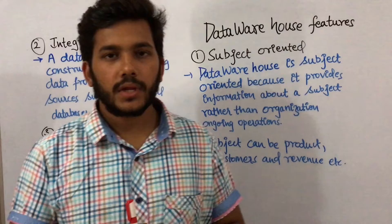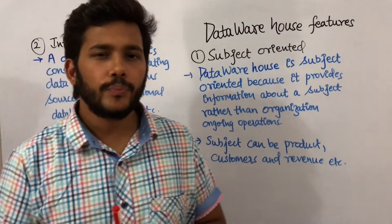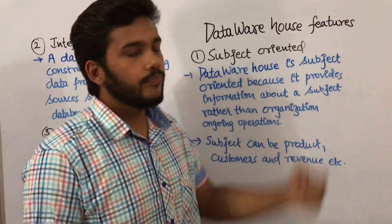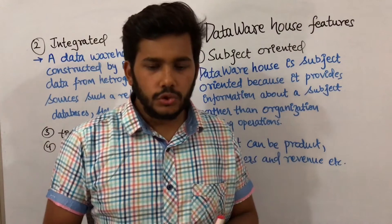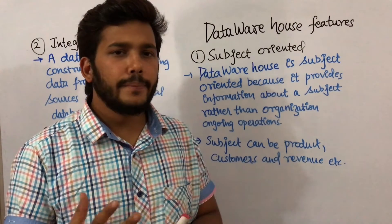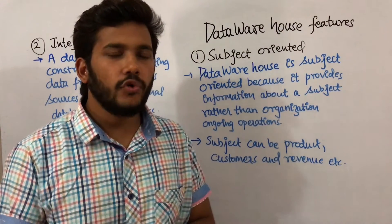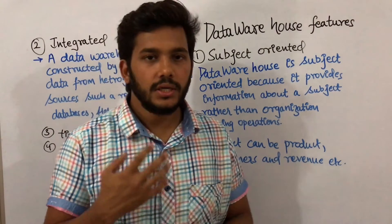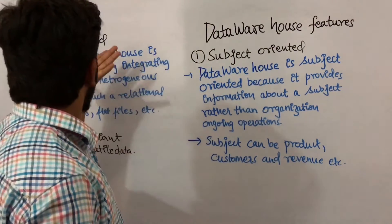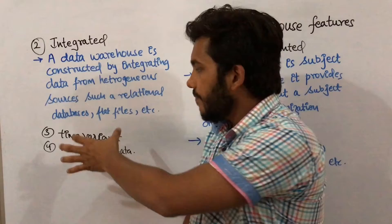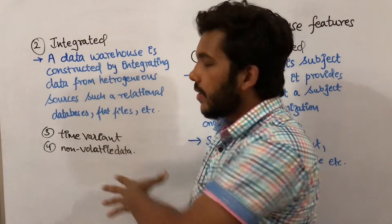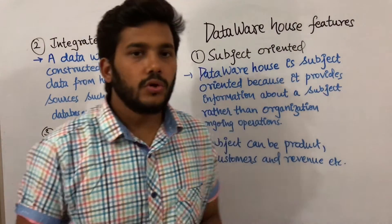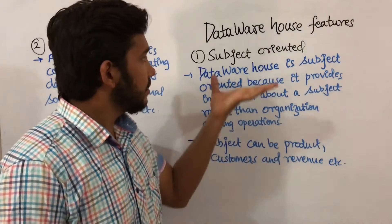In this video I am going to talk about data warehouse features. There are four main features of data warehouse: subject oriented, integrated, time variant, and non-volatile. Now let's start.